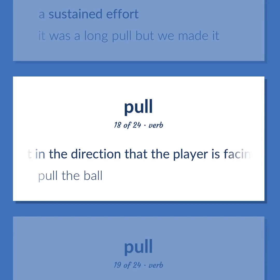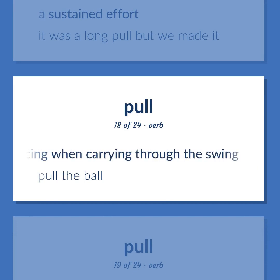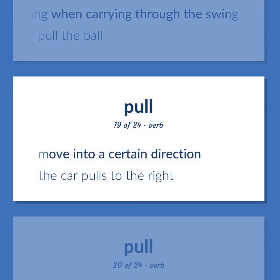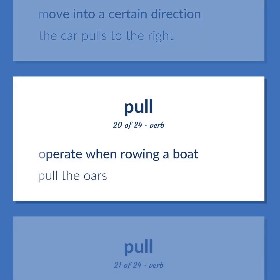Pull: to hit in the direction that the player is facing when carrying through the swing — 'pull the ball.' Also, to move into a certain direction — 'The car pulls to the right.' Also, to operate when rowing a boat — 'pull the oars.'